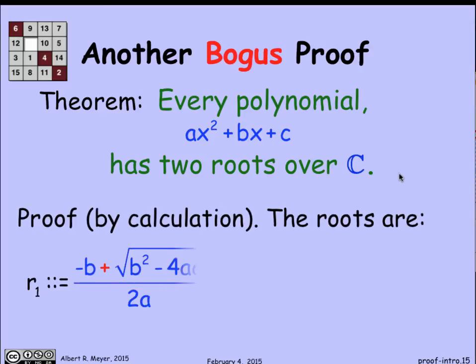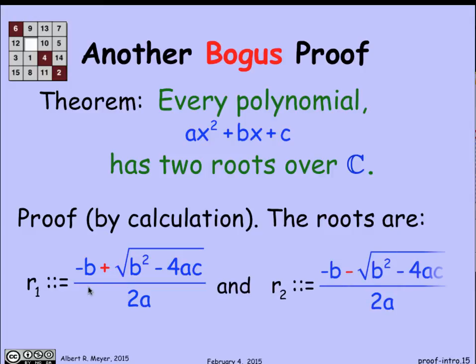And how do you prove that? Well, you just write down the formulas for the roots. You know the quadratic formula. One root is minus b plus the square root of this quantity over 2a, and the other root is minus b minus the square root of b squared minus 4ac over 2a. If you could plug in this formula for R1 for x into this polynomial, it would simplify to be equaling 0, which shows that this is a root. You could plug that one in for x and simplify algebraically and discover it was 0, proving that R2 is a root. We've just proved that every polynomial has two roots.